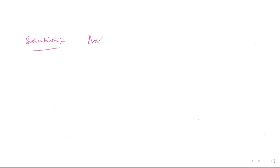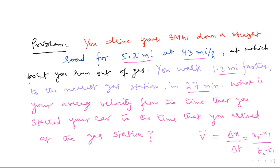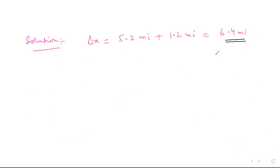Solution: delta x is 5.2 miles plus 1.2 miles, which is 6.4 miles. So this is our delta x — 5.2 miles with the car and 1.2 miles through walking, which becomes 6.4 miles as our delta x. We are talking of motion in one dimension and we are taking that dimension as x.